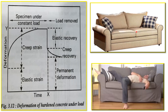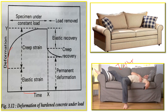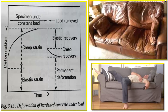Now imagine you're sitting on this sofa set for a very long period — one or two months. You are essentially a dead load constantly applying force on the sofa set. As time increases — 7 days, 14 days, 1 month, 2 months, 3 months — the deformation keeps increasing. You can see on the graph that deformation is increasing continuously up to the point when you eventually decide to get up.